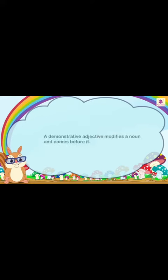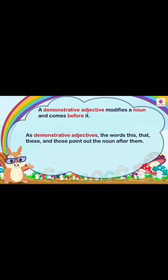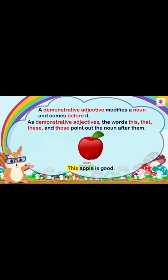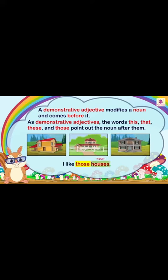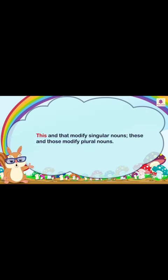A demonstrative adjective modifies a noun and comes before it. As demonstrative adjectives, the words this, that, these, and those point out the noun after them. For example: 'This apple is good' and 'I like those houses.' This and that modify singular nouns; these and those modify plural nouns.